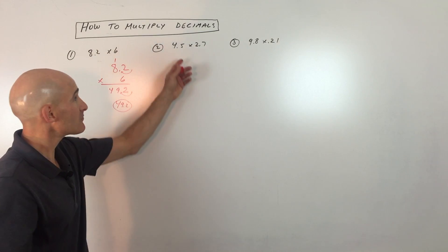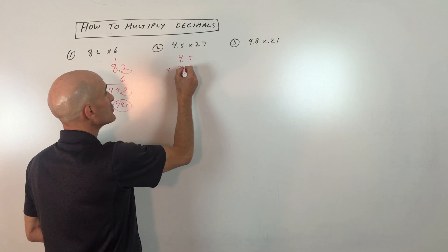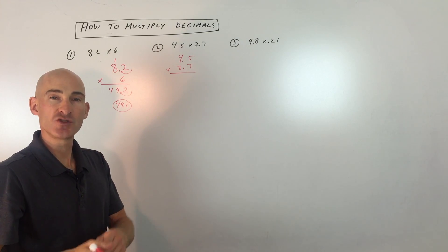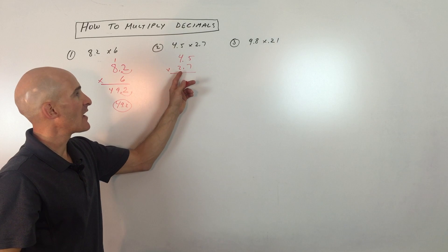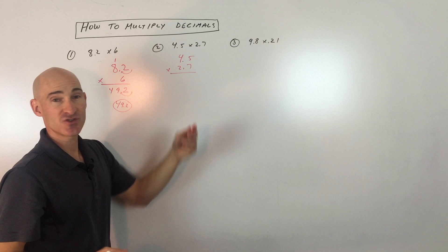Let's look at another example. This one here, we've got 4.5 times 2.7. Now just a quick note, you don't have to line up the decimal points. You only do that when you're adding and subtracting decimals. With multiplying, you don't have to line them up. You're just going to be thinking of these numbers as two whole numbers, 45 times 27.